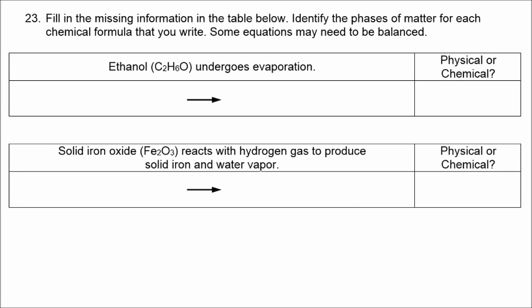Ethanol undergoes evaporation — that is a physical change. The formula of ethanol, C2H6O, is the same on both sides of the arrow. It goes from a liquid to a gas.